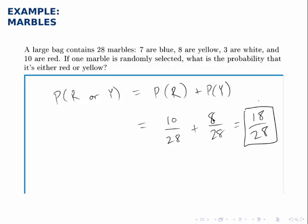Another way to do this problem is to think about, well there's 28 marbles total, and 18 of those marbles match the description of either red or yellow. There are 10 red, 8 yellow, so 18 of them are either red or yellow. And it turns out that way of thinking of it is of course equivalent to what we just did, and we get the same answer in that case.